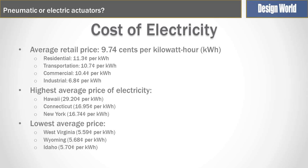I felt compelled to include this slide because the cost of electricity varies significantly depending on where you are. In Connecticut or New York it's about 17 cents per kilowatt hour; in Idaho, it's 5.7 cents. In my calculations I use 10 cents, which is approximately the average retail price of electricity. But it can vary widely and results can be significantly affected. I'd suggest you look at your own electric bill to find your actual rate.